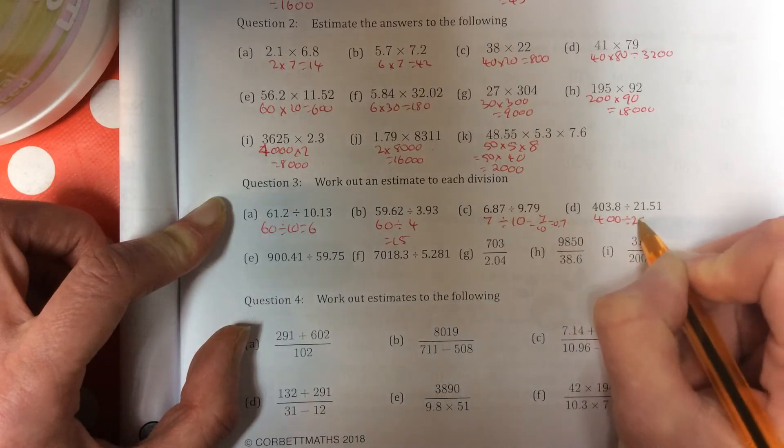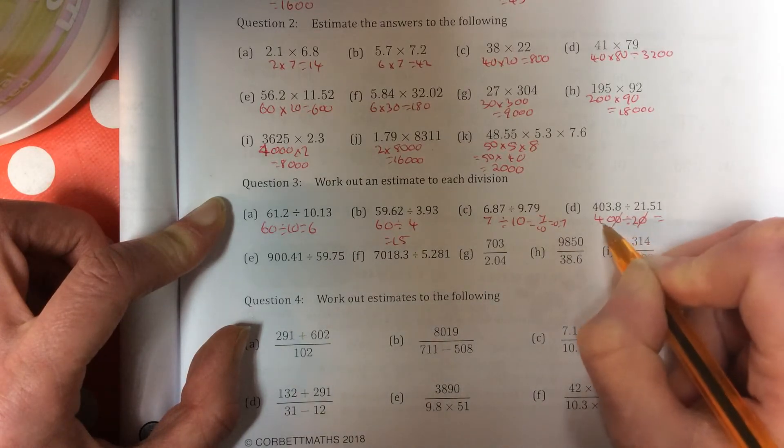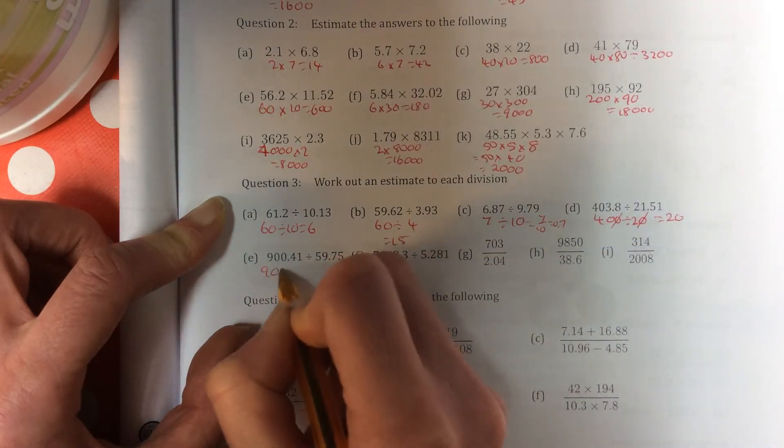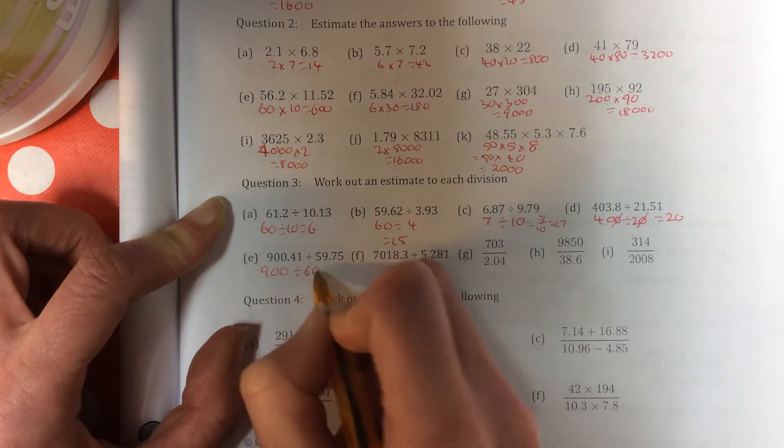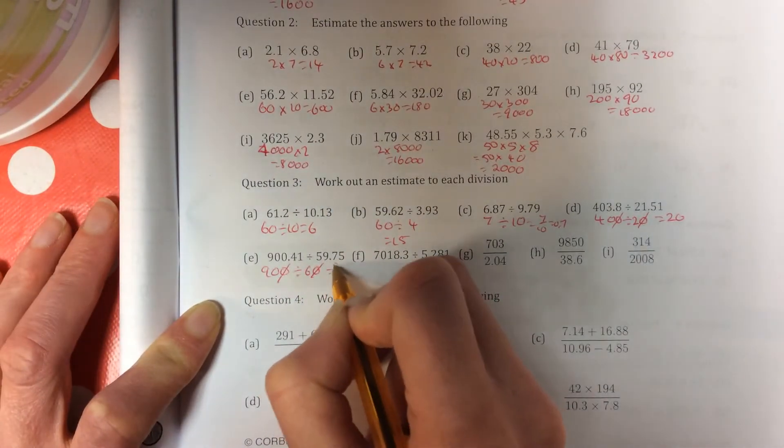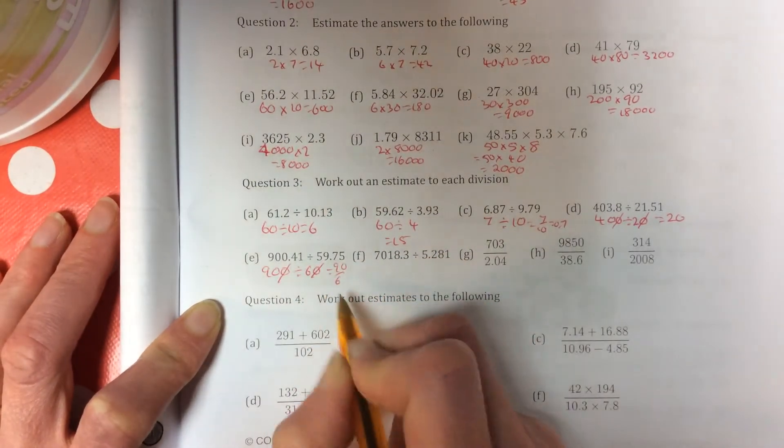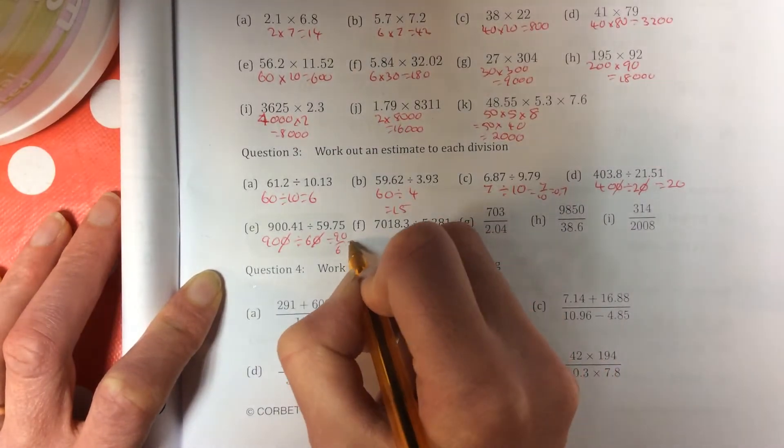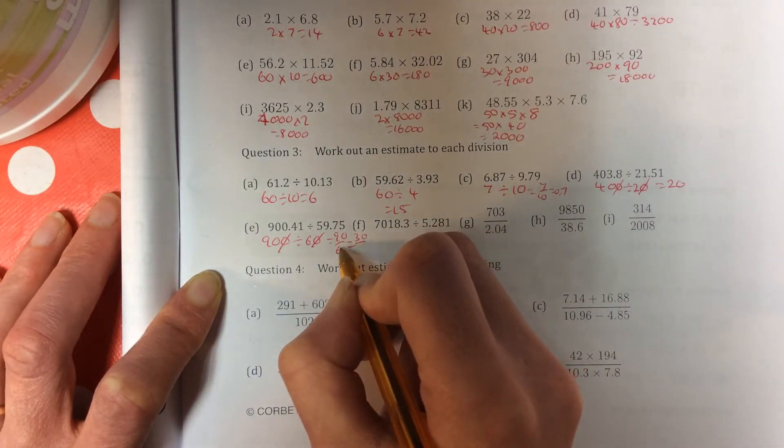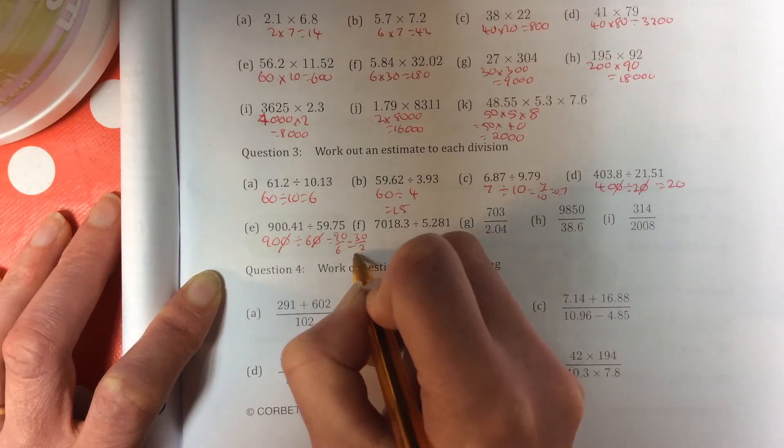400 divided by 20, take off a nought, becomes 40 divided by 2 is 20. 900 divided by 60, take off a nought. Now 90 divided by 6, you can write it as a fraction. If you can't get these ones, don't worry too much about it. You can divide top and bottom by 3 to give you 30 over 2, and that cancels down into 15.